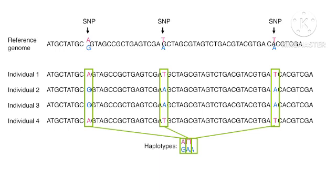For example, here there is a DNA sequence from a reference genome. You can see that at three locations we have single nucleotide changes — instead of A there is G, instead of T there is A, and instead of T there is A again. These changes should be present in more than one person in the population to be called a single nucleotide polymorphism.